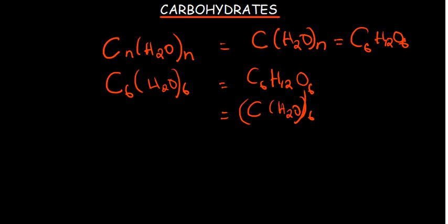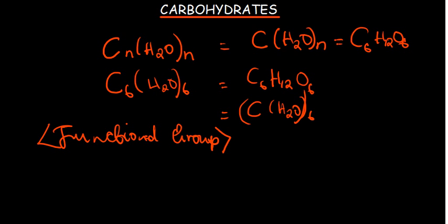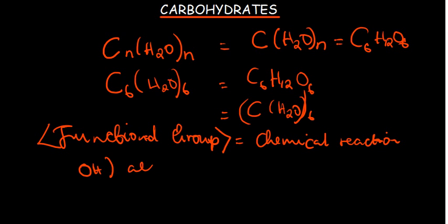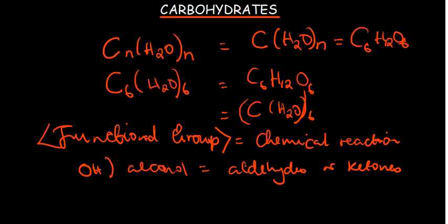We have what we call a functional group. A functional group is what enables a molecule to participate in a chemical reaction — it gives the molecule its chemical properties. For instance, if we have a functional group of OH, you already know that this is going to be an alcohol. When we talk about carbohydrates, the functional groups are either aldehydes or ketones.